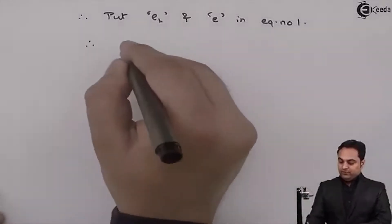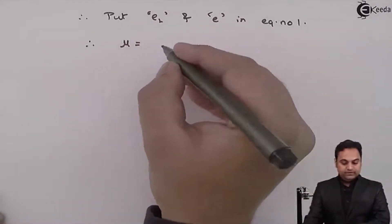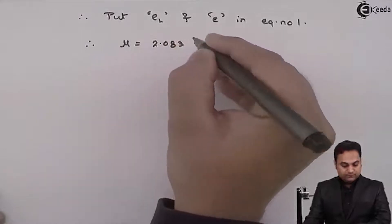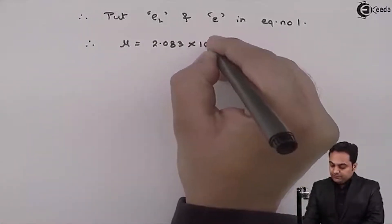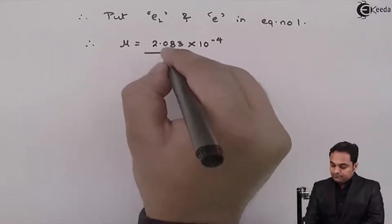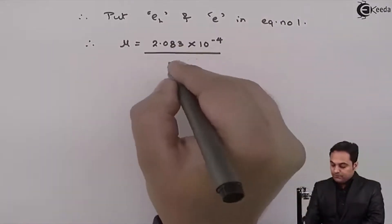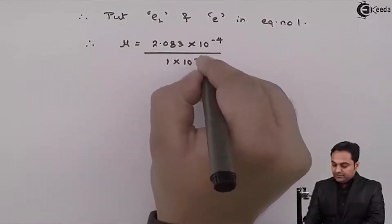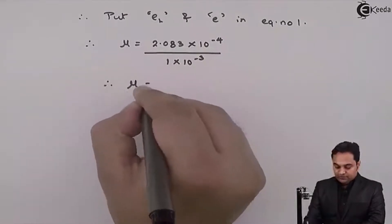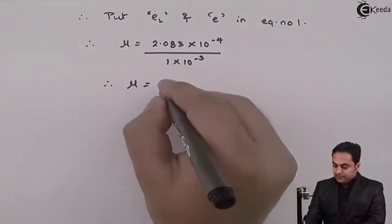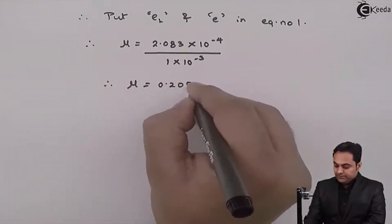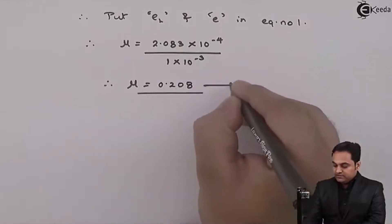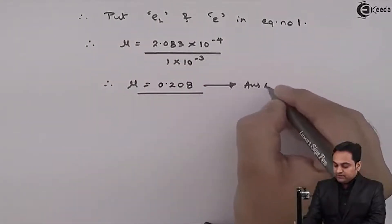So therefore mu is equal to lateral strain 2.083 into 10 raised to minus 4 upon 1 into 10 raised to minus 3. From this mu value comes out to be 0.208. This is our first answer.